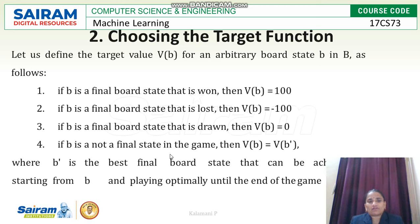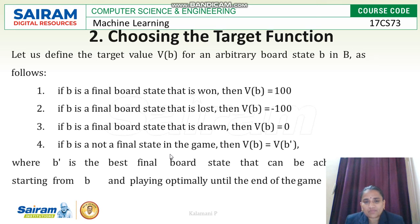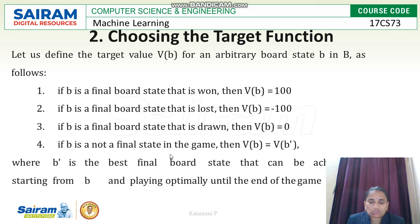How to choose the target value V(B) for an arbitrary board state B in the checkers learning problem: if B is the final state and a win, then V(B) = 100. If B is the final state and a loss, then V(B) = −100. If B is the final state and a draw, then V(B) = 0.